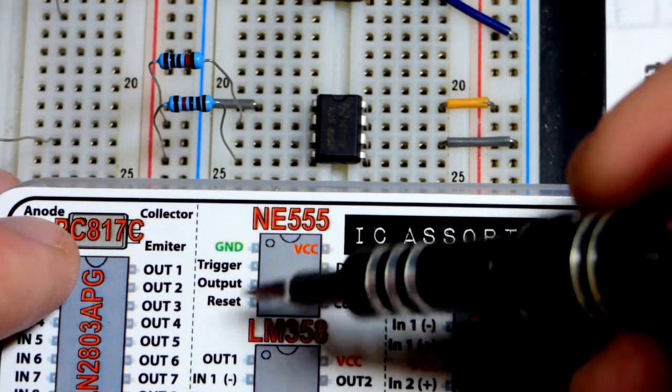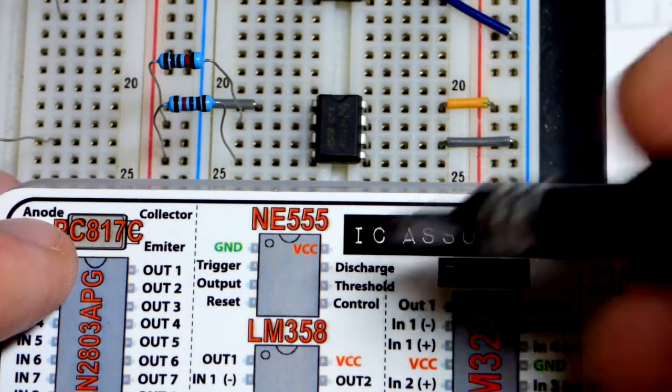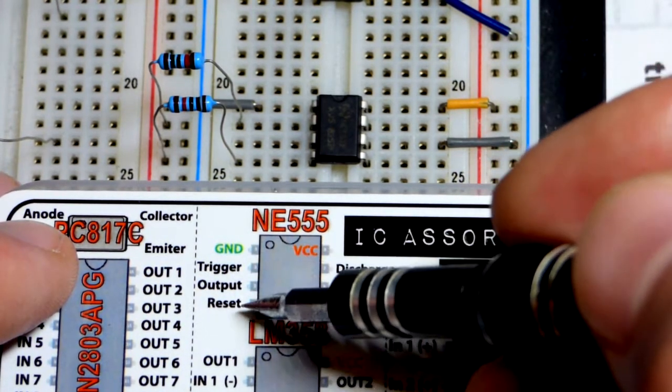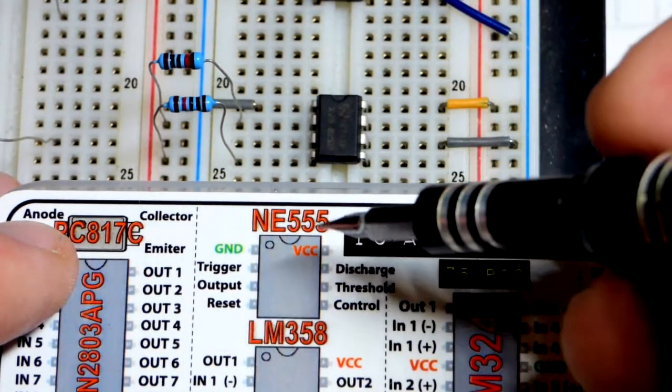Pin 2, the trigger, and pin 4, the reset, do respond to a low signal. Now, we don't want them to have a low signal that's false or something from the radio waves and stuff, whatever, in the air.